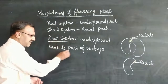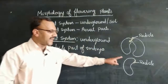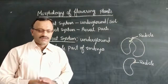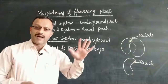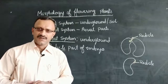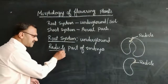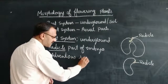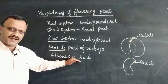The roots which develop from the radicle, which is a part of the embryo, are called true roots. If roots develop from parts other than the radicle — like in a banyan tree where roots come from the branches, or in sugarcane where roots arise from the nodal region of the stem — such roots which do not develop from the radicle are called adventitious roots. Adventitious roots are those which develop from parts of the plant other than the radicle.